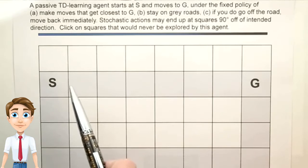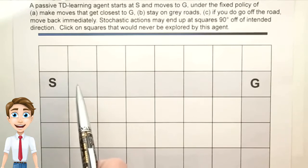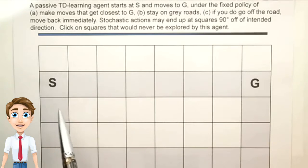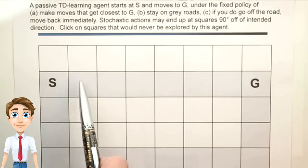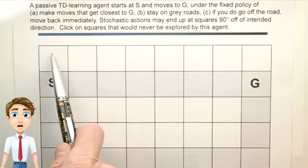The actions are stochastic, and they may go in the intended direction, or they may go 90 degrees off. So if we were here, we'd plan to start under this policy going this direction. We might end up there, but we might end up here or here.